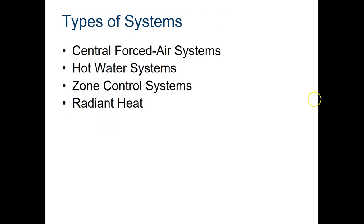There are a couple of different types of systems. There's a central forced air system — that's what most modern houses are using. In this type of system, there is a coil that either has cold fluids running through it with air passing over top, or it works in the opposite direction with hot gases or hot fluids inside the coil. Air passing over top of that is what creates your hot or cold air inside a building.